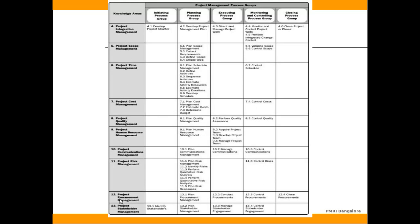To understand this better, here we have on the vertical axis the 10 knowledge areas, and on the horizontal axis the 5 process groups of Initiation, Planning, Execution, Monitoring and Controlling, and Closing. If you look at the process Develop Project Charter, it is linked to the Initiation Process Group and to the Project Integration Management Knowledge Area. Likewise, Identify Stakeholders is part of the Initiation Process Group and is linked to the Project Stakeholder Management Knowledge Area. So every one of the 47 processes is linked to one Knowledge Area and one Process Group.